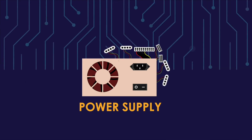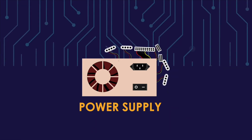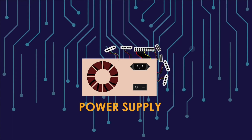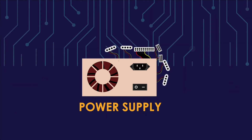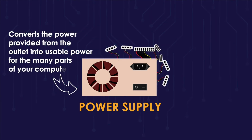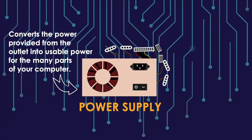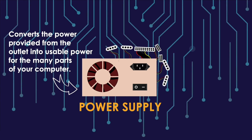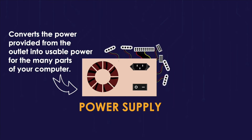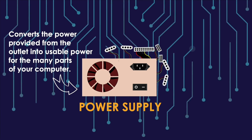Since the computer is an electronic device, electricity is needed for it to work, and that's when the power supply unit comes in. Found on the back of the system unit, the power supply unit is the piece of hardware that converts the power provided from the outlet into usable power for the many parts of your computer.